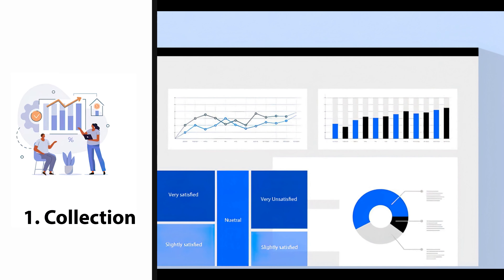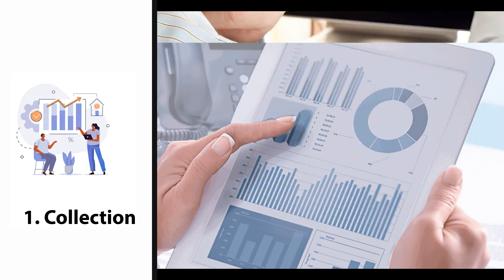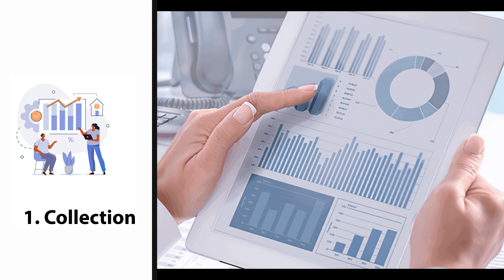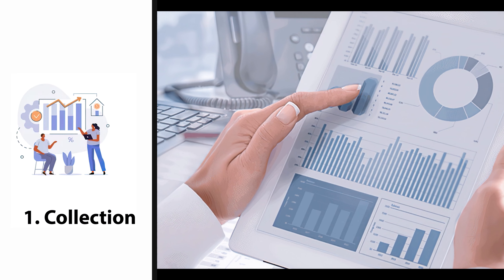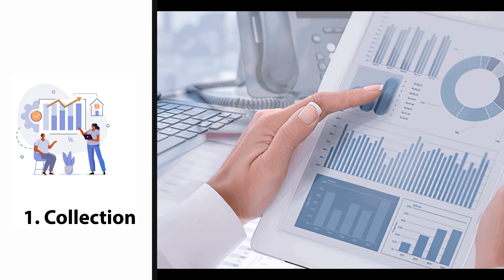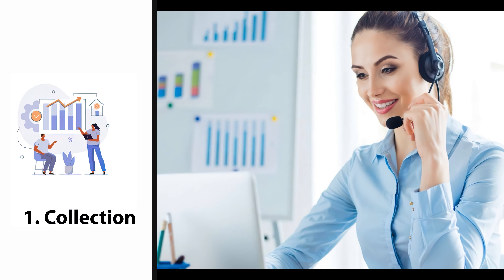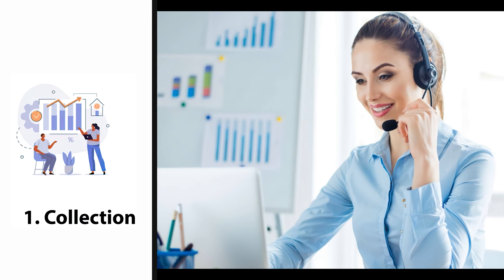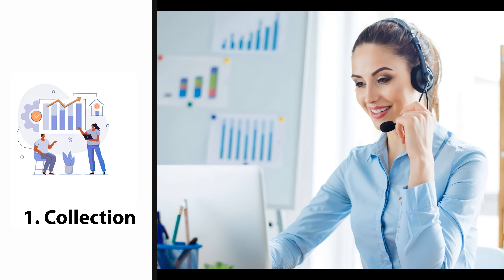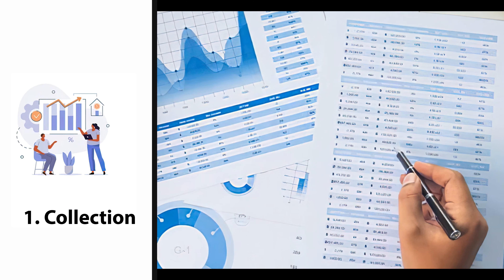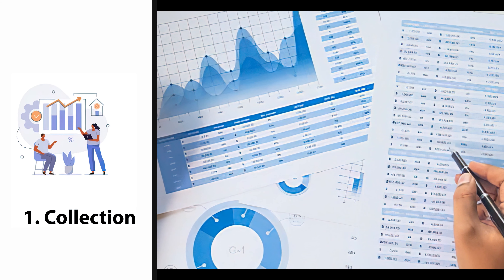Call center monitoring is made up of three distinct phases: collection, analysis, and feedback. During the collection phase, call center software gathers predetermined data. The software collects call center activity data hourly, daily, weekly, monthly, or during any other desired amount of time, including specific date ranges.